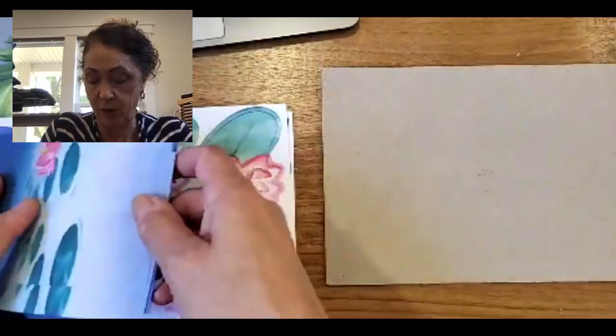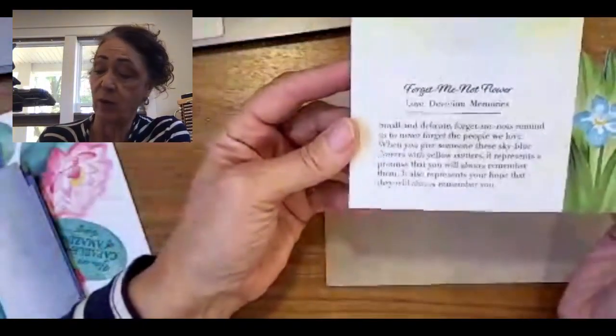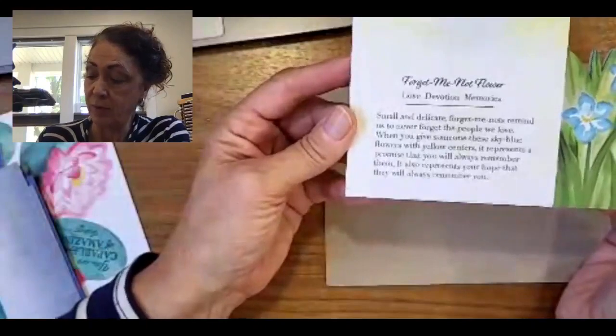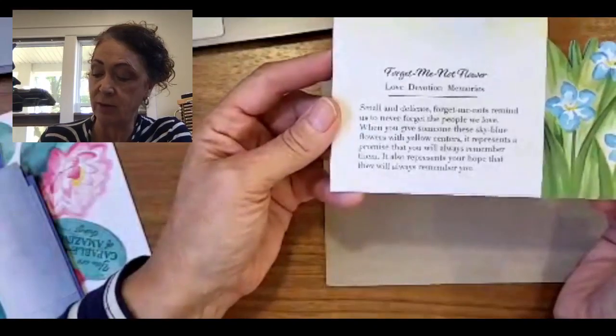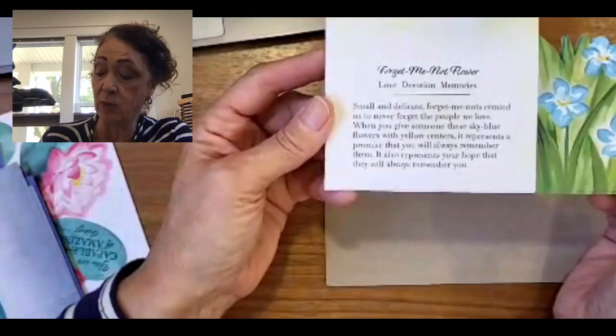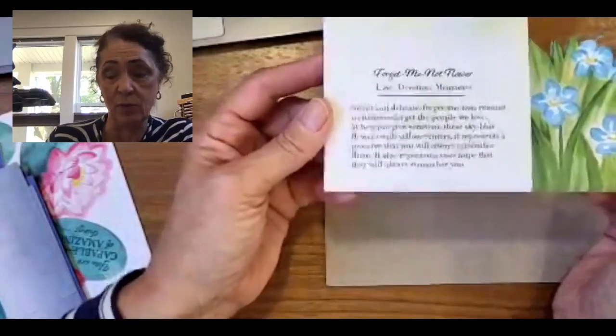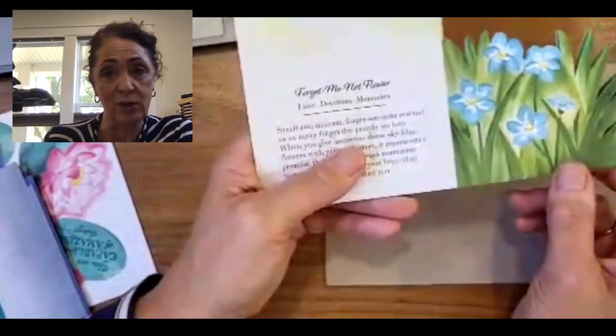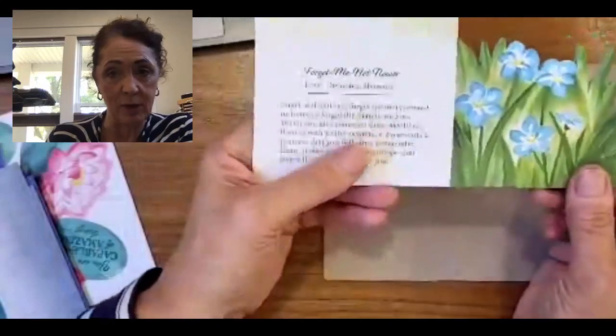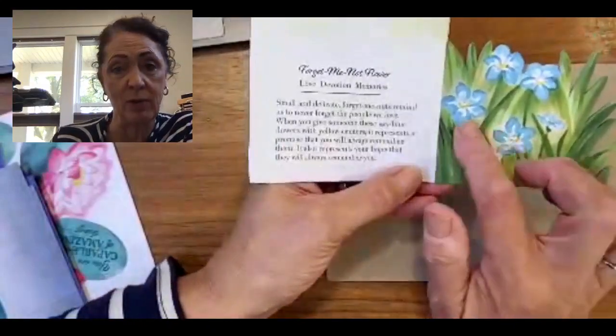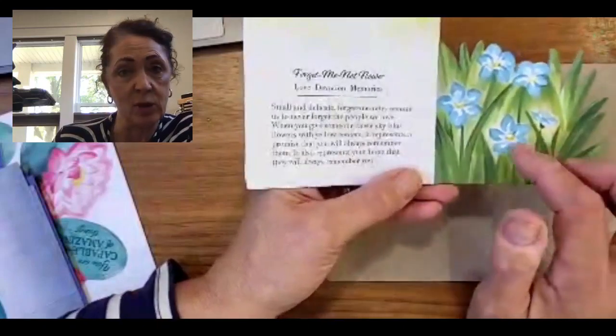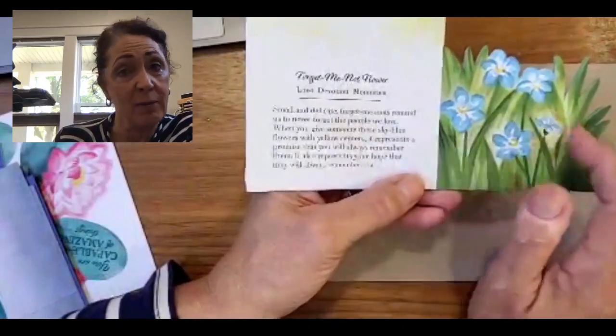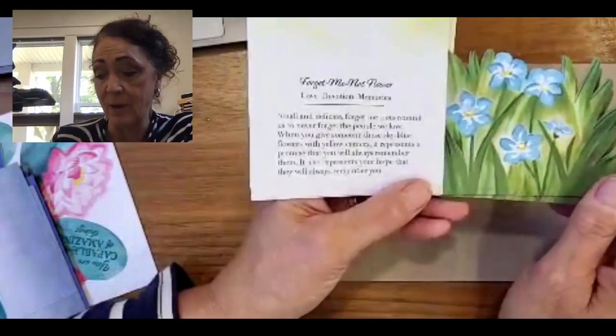We're going to do the forget me not flower first. It's called meaningful flower. So on the back of the cards, they have written what the forget me not means: love, devotion, memories. Small and delicate, forget me nots remind us to never forget the people we love. And I want to share one more thing about forget me nots that I just learned this year. When a bee pollinates the flower, it loses its yellow center. It turns white. So the yellow ones are telling the bee, forget me not, don't forget to come and pollinate me.